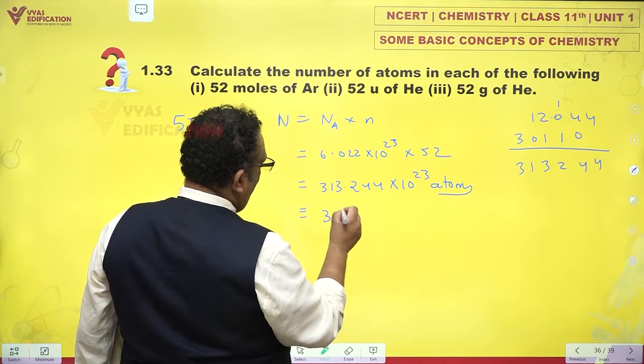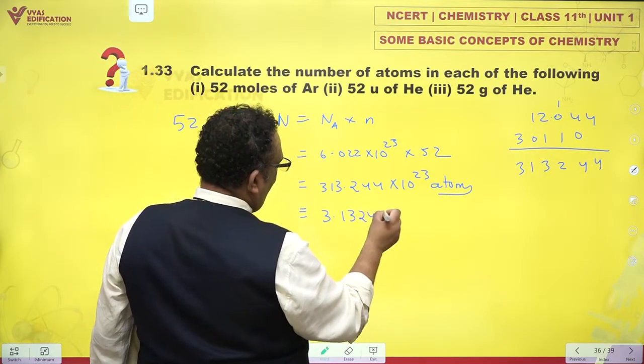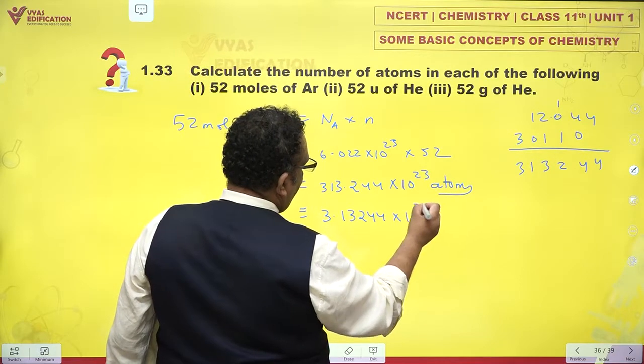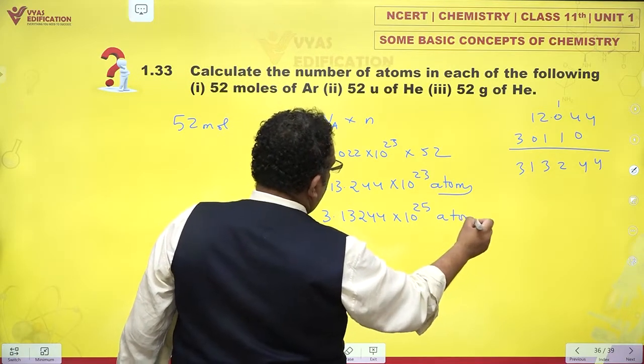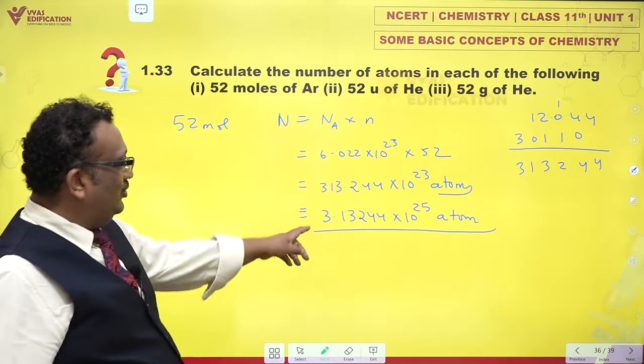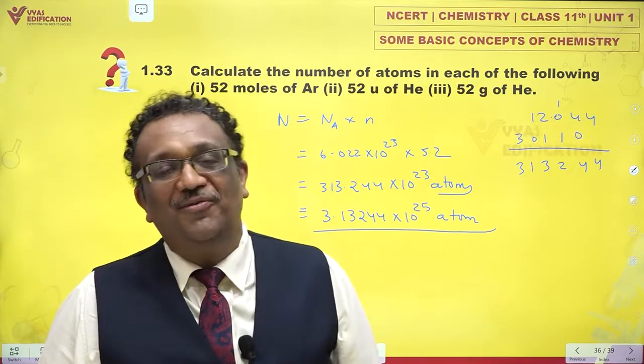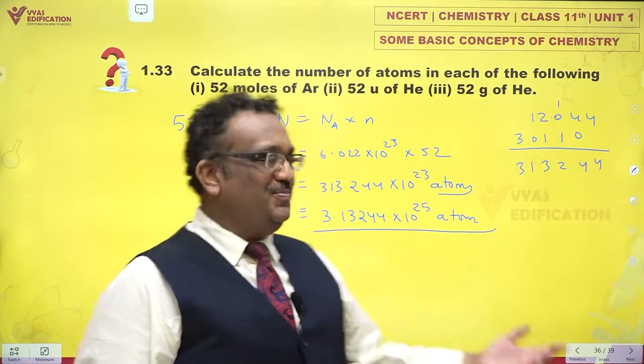Or 3.13244 × 10^25 atoms if I write down in standard scientific notation. This would be the number of atoms. That's perfectly fine.